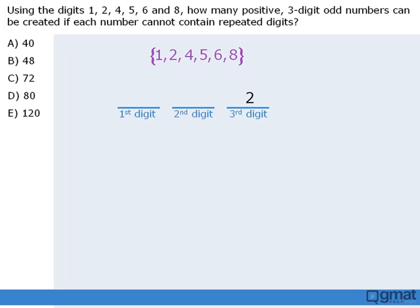Well, keep in mind that our three-digit number cannot contain any repeated digits. So since we have already used one of the digits to accomplish the third stage, only five digits remain. So there are five ways in which we can select our first digit.